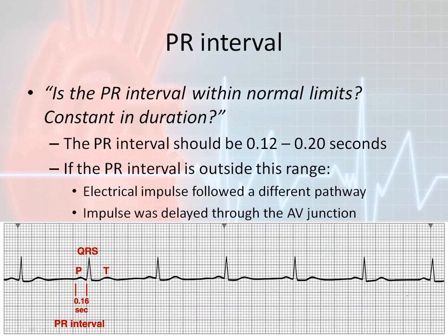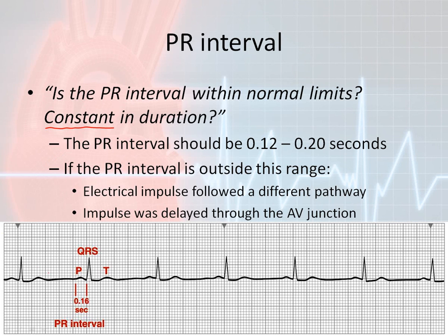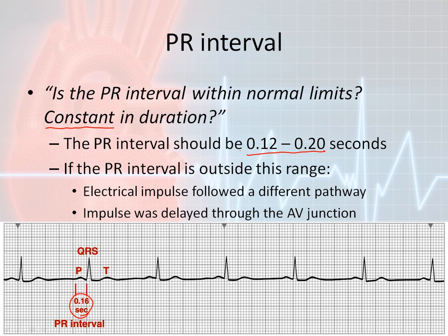Let's assess the PR interval itself. Ask yourself: is the PR interval normal, does it have normal limits, and is it constant in duration? There are going to be rhythms where the PR interval is not constant, and that goes into part of your rhythm interpretation. They've already measured out that the PR interval is four little boxes, which is 0.16 seconds. Remember, the normal PR interval is 0.12 to 0.20 seconds, and this interval falls within the proper range. If the PR interval is outside that range, it means there are impulse problems taking a different pathway or it could be delayed through the AV junction.